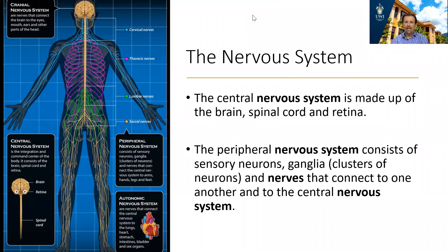Let's begin by just looking at the nervous system. The diagram on the left of the screen indicates that the nervous system is divided into the central nervous system and the peripheral nervous system. The central nervous system is your brain, your spinal cord, and your retina — this is the command and control center where information is processed and decisions are made. Information comes into and goes out of the central nervous system via the peripheral nervous system, which consists of the sensory neurons, the ganglia, and nerves that connect to one another and into the central nervous system.